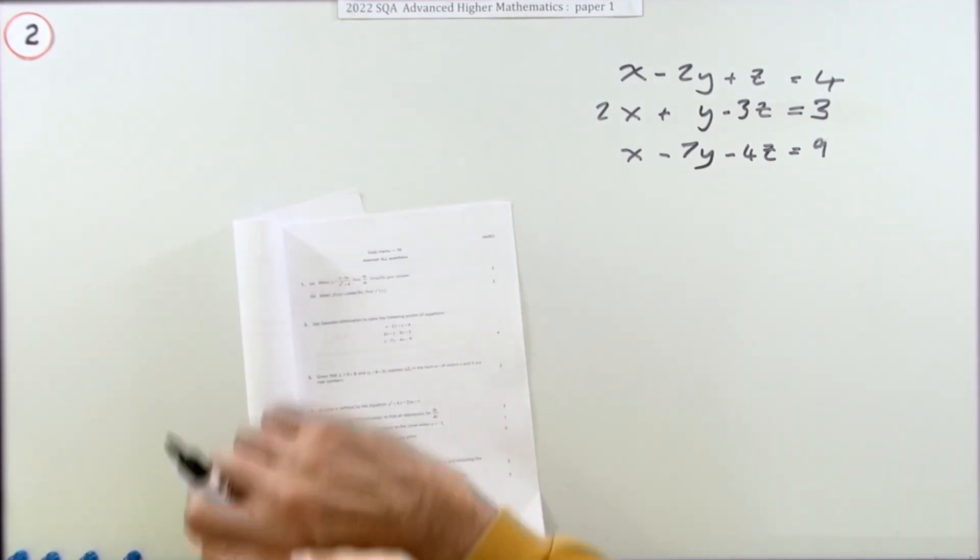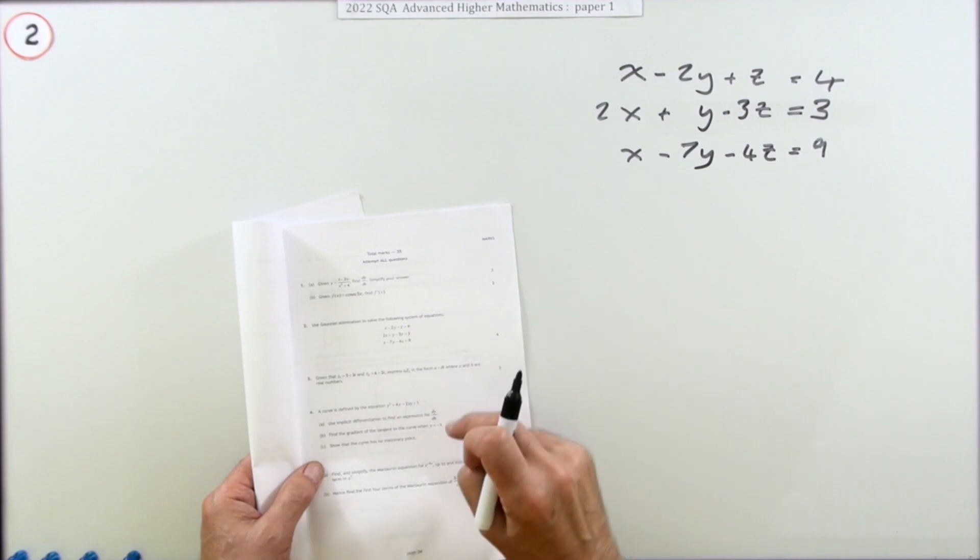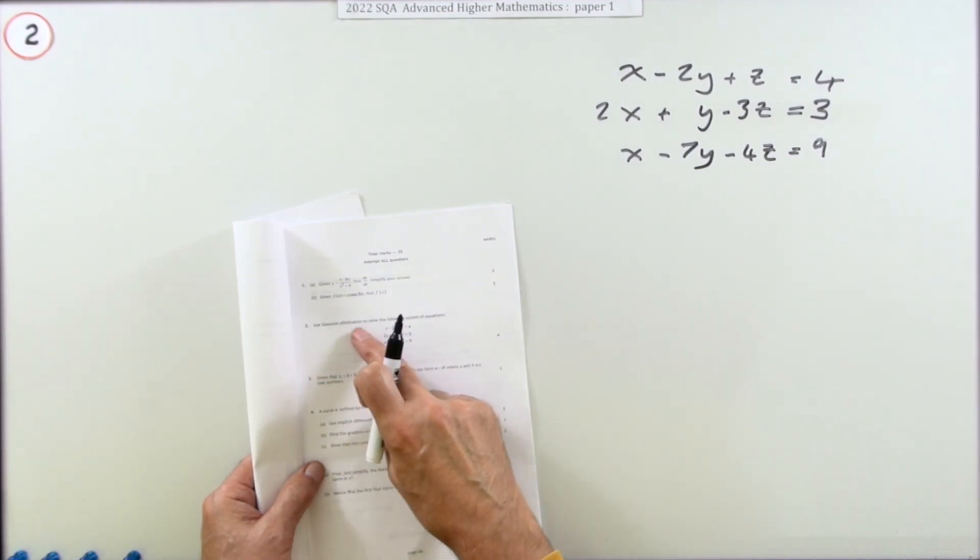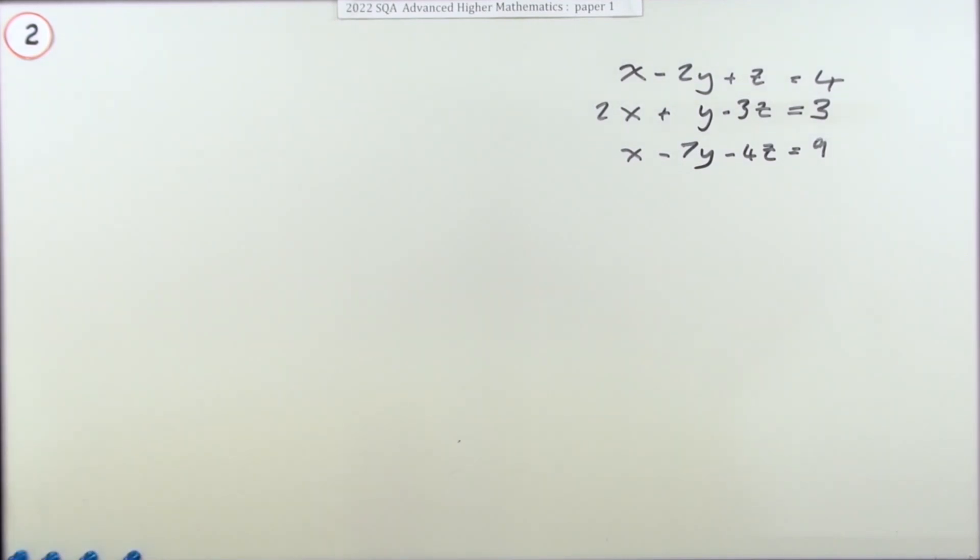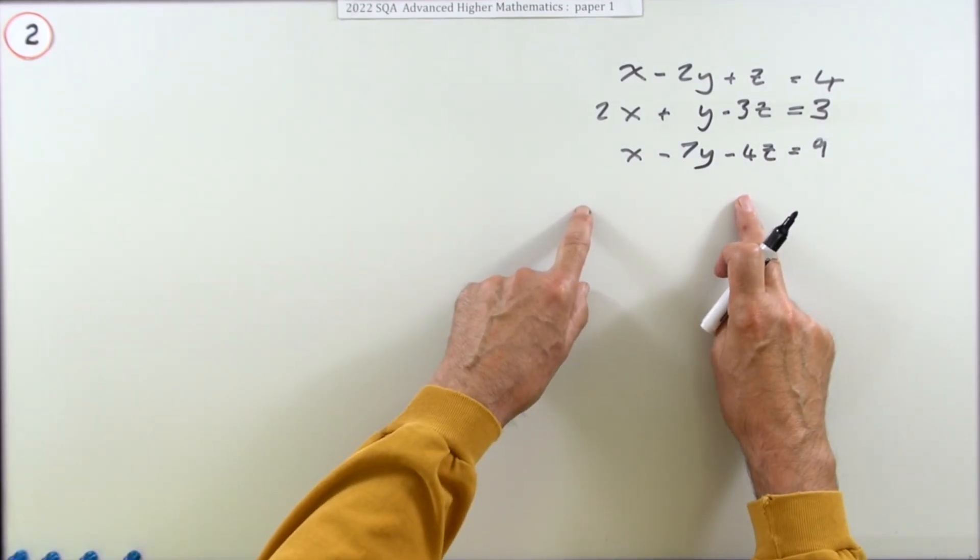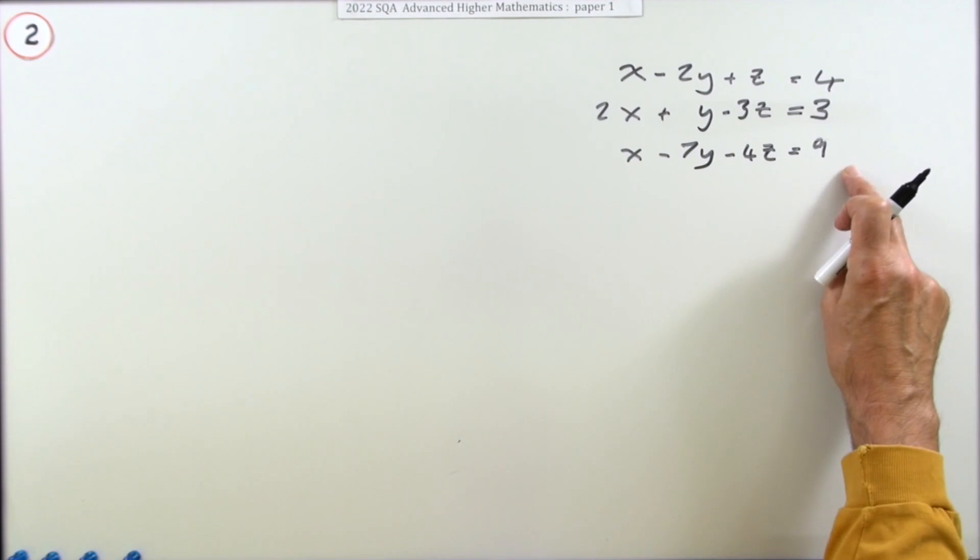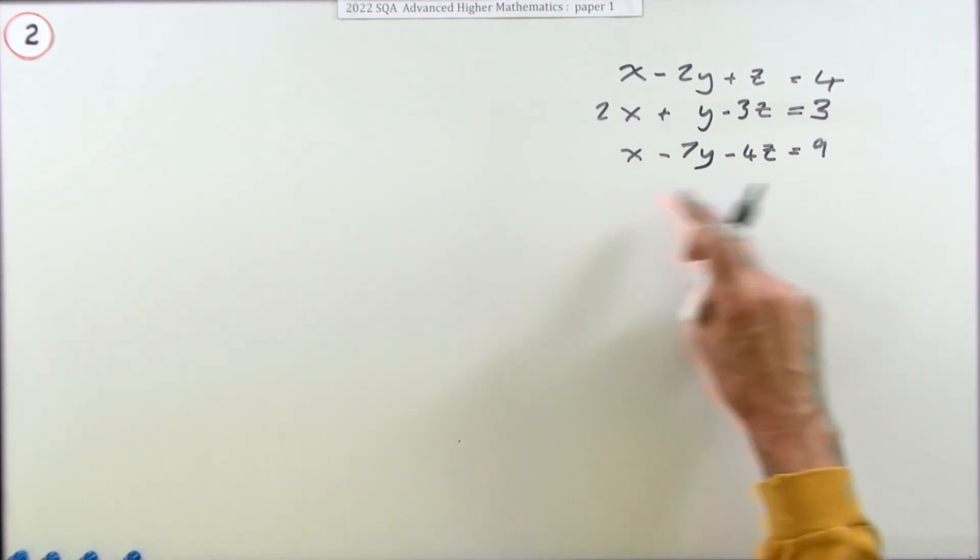Question two from the 2022 Advanced Higher paper, one format question: use Gaussian elimination to solve this system of equations. Now it said use Gaussian elimination because you could have just solved that algebraically - that used to be at the start of the Higher course several decades ago.